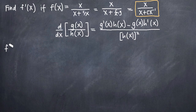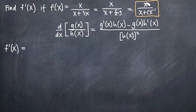We'll say the derivative of f(x) is f prime of x. Our formula tells us the first thing we need is g prime of x, the derivative of g(x), which is our numerator. Our numerator is x, and the derivative of x is just 1. So we'll put 1 here, separating everything with parentheses so it's easy to identify exactly where we are. That was g prime of x — we've got that part.